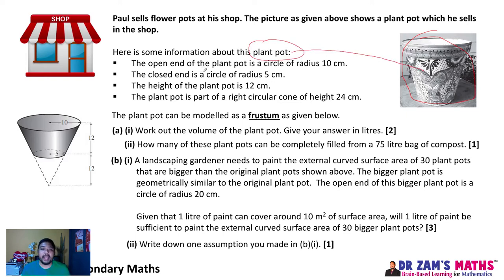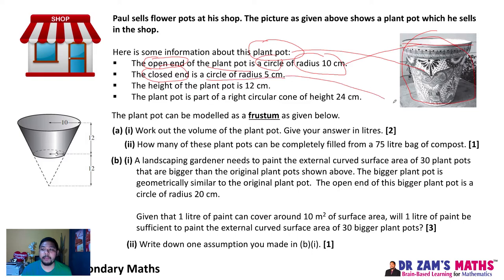Normally they will give you the dimensions of the pot. In this case, the open end of the plant pot is a circle of radius 10 cm. The open end here has a radius of 10 cm. The closed end is a circle of radius 5 cm. The height of the pot is 12 cm.